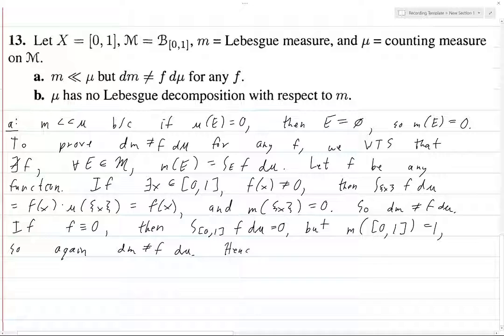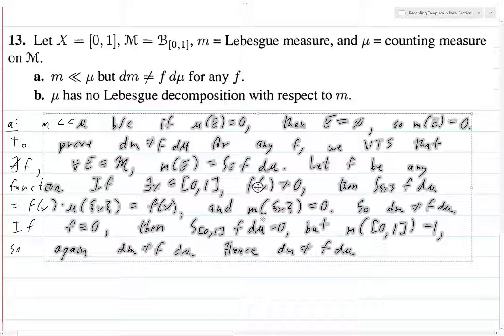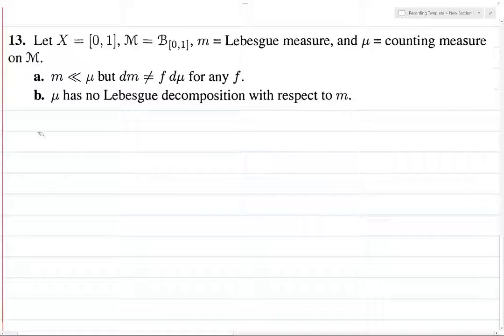So again, dm is not equal to f d mu. And hence, dm can never be f d mu because f is either going to be identically 0 or it's going to be not 0 somewhere. And in both cases, we know that this equality does not hold. All right, so that takes care of part a, and now let's move on to part b.